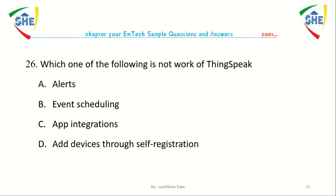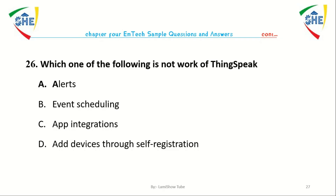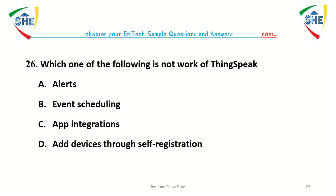Question number twenty-six: Which one of the following is not the work of the ThingSpeak platform? A. Alert, B. Event scheduling, C. App integration, D. Add device through self-registration.